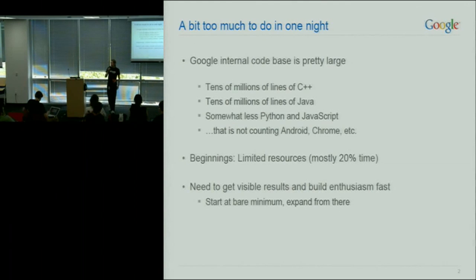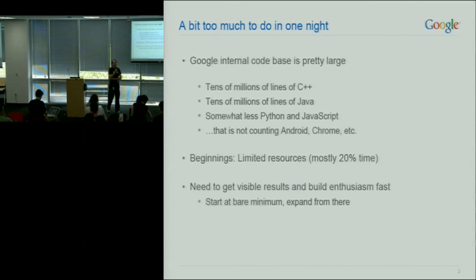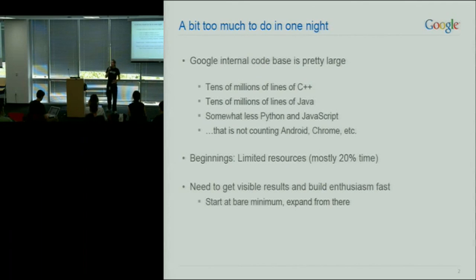When I say Google's code base, we actually mostly have one single tree. This has advantages and disadvantages. It's great because you can fix things once instead of 100 times. It's not so great when you break something central and you have a couple thousand engineers that are mad at you. At that point, it's good being in Zurich.